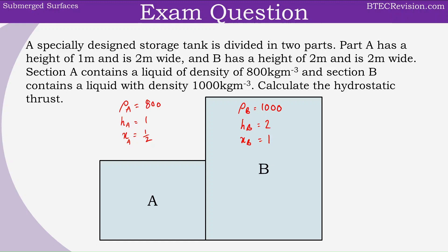Now we can calculate the hydrostatic thrust from A acting towards B using F equals rho g a x. Rho is 800, g is 9.8. The area of A is height times width: 1 times 2, which is 2 meters squared. So the thrust from A is 800 times 9.8 times 2 times 0.5, which gives us a value of 7,840 newtons.